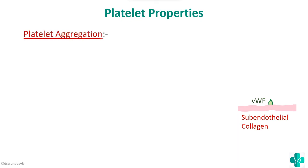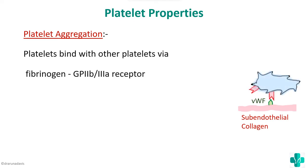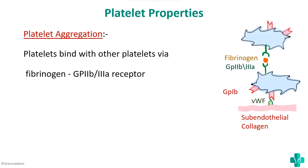The third property is platelet aggregation. Platelets can not only adhere to the vascular endothelium but can also aggregate or adhere to other platelets. Platelets bind with other platelets via fibrinogen and GP2B3A receptors. The activated platelet has the GP2B3A receptor which, along with fibrinogen, binds to other platelets to facilitate platelet aggregation. So the three properties are: platelet adhesion, platelet activation, and platelet aggregation.